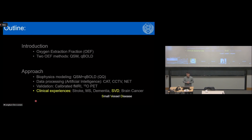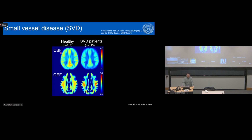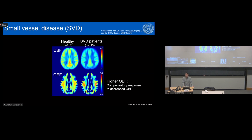QQ was also applied to small vessel disease (SVD), the most prevalent pathology for vascular dementia, in 113 healthy subjects and 113 SVD patients. SVD patients show lower CBF than healthy subjects, and greater QQ-based OEF than healthy subjects. This higher OEF in SVD may reflect a compensatory response — increasing the efficiency of oxygen extraction to maintain total oxygen consumption (CMRO2) constant despite decreased blood flow input.